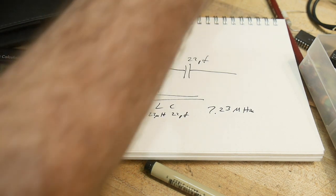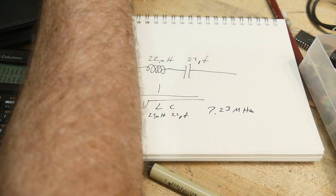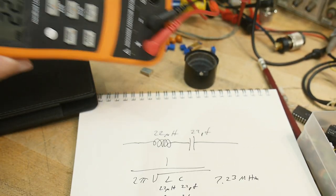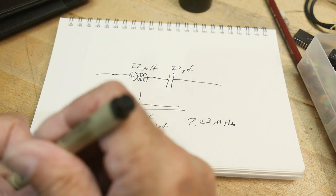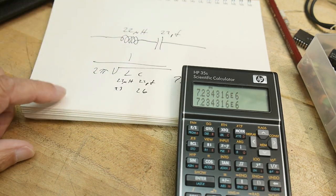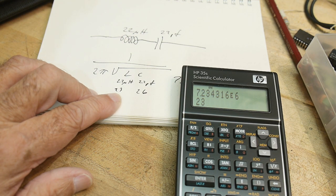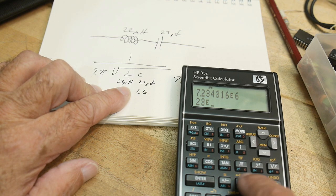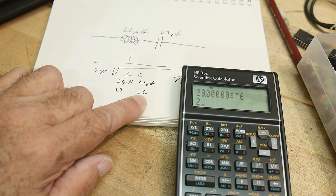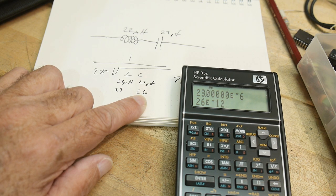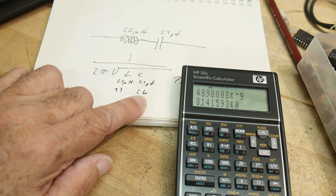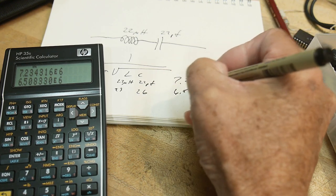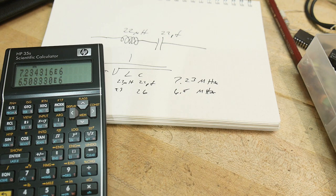I've just used an LCR meter and I've measured the actual values of the parts that we have. Let's see what kind of values those give us. It's 23 microhenries and it's 26 picofarads. Square root, two times pi times one over... okay, and we get 6.5 megahertz.